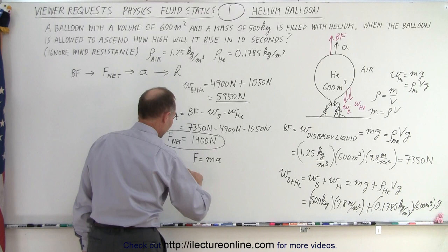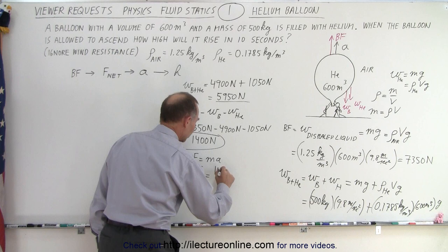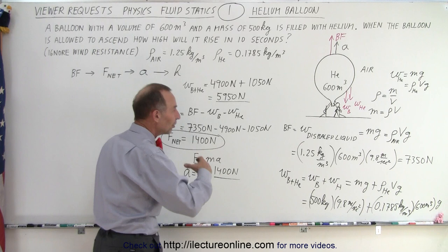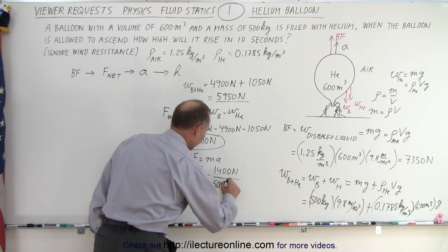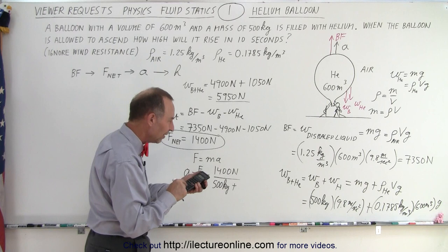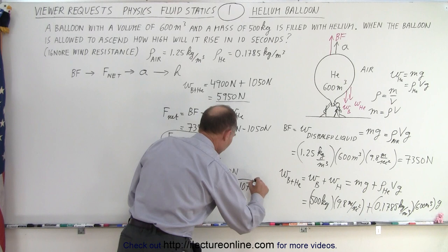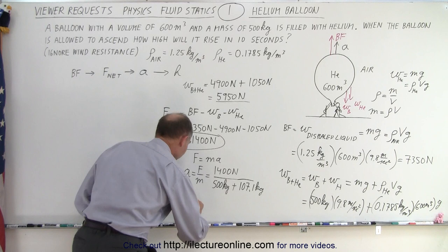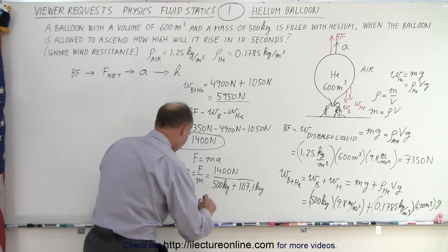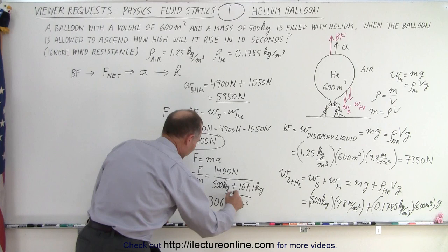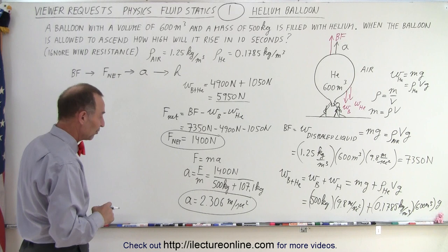Now we're ready to calculate the acceleration. We know F equals ma, so a equals F divided by m. The net force is 1,400 newtons, and the total mass is the mass of the balloon plus the mass of the helium. The mass of helium is 0.1785 times 600, which gives 107.1 kilograms. So acceleration equals 1,400 divided by 607.1, giving us 2.306 meters per second squared upward.